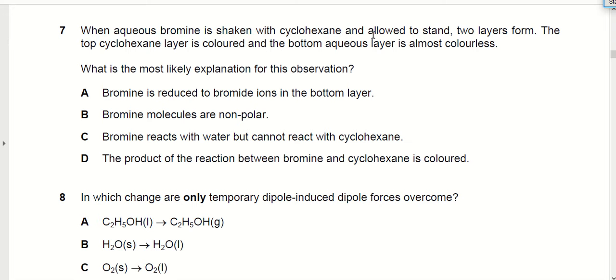When aqueous bromine is shaken with cyclohexane and allowed to stand, two layers form. The top cyclohexane layer is coloured and the bottom aqueous layer is almost colourless. What is the most likely explanation for this observation?